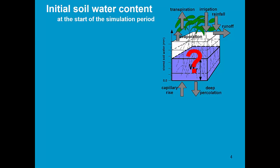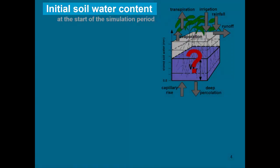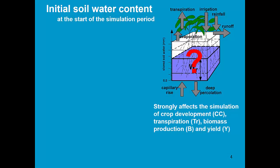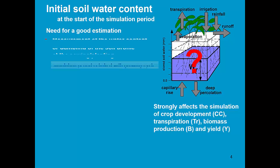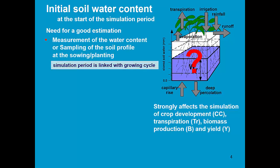Let's focus first on the initial soil water content. A good estimate of the initial soil water content is essential, since it strongly affects the simulation of crop development, transpiration, biomass production and crop yield. So there is really a need for a good estimation, and you can obtain that by measurements — measurements of the soil water content by sampling the soil profile at sowing and planting.